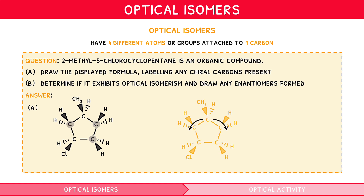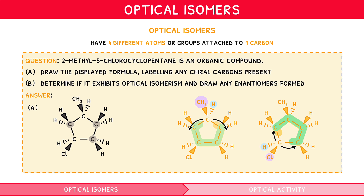Using our clockwise/anticlockwise trick, for the second carbon we get the groups CH2CH2CH2CH2, H, and CH3, and for the fifth carbon we get CH2CHCH3CH2CH2 and CH2CH2CHCH3CH2CH2. Since each carbon has four different groups, both would be chiral.